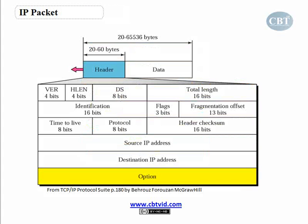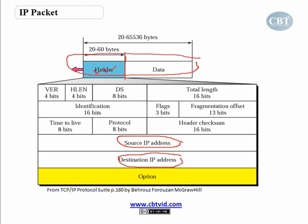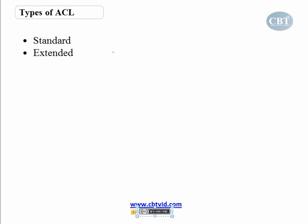If you look at the structure of a packet, you see that the whole packet has a header and data. If you go into more detail in the header, you'll see there are many different fields, but the most important ones for us are source IP address and destination IP address. The router looks at the source and destination IP address of a packet, then looks at the list of conditions I've created. If it finds a match with those conditions, it applies that rule to the packet.